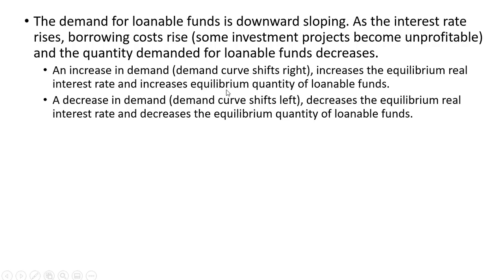An increase in demand — the demand curve shifts right — causes the equilibrium real interest rate and equilibrium quantity of loanable funds to increase. If we have a decrease in demand, the demand curve shifts left, and that decreases the real equilibrium interest rate and decreases the equilibrium quantity of loanable funds.